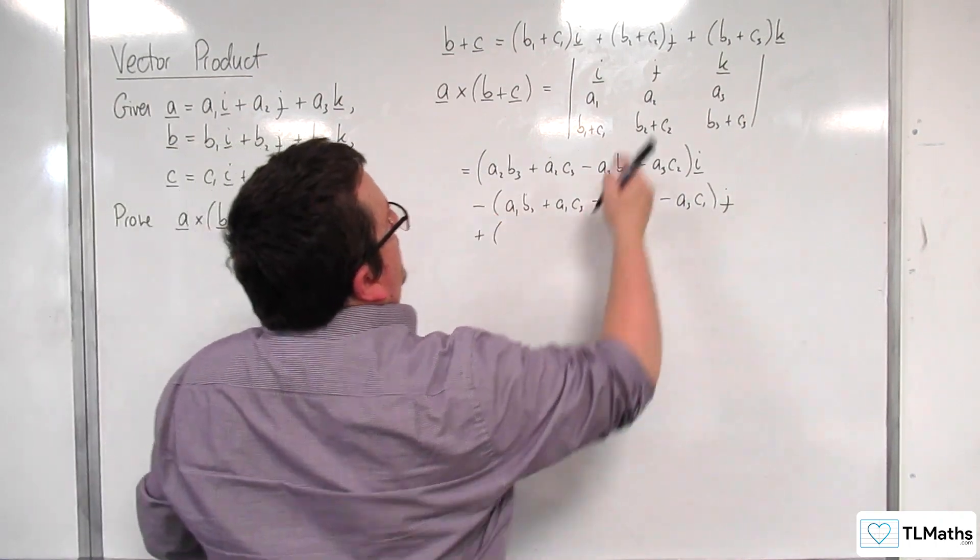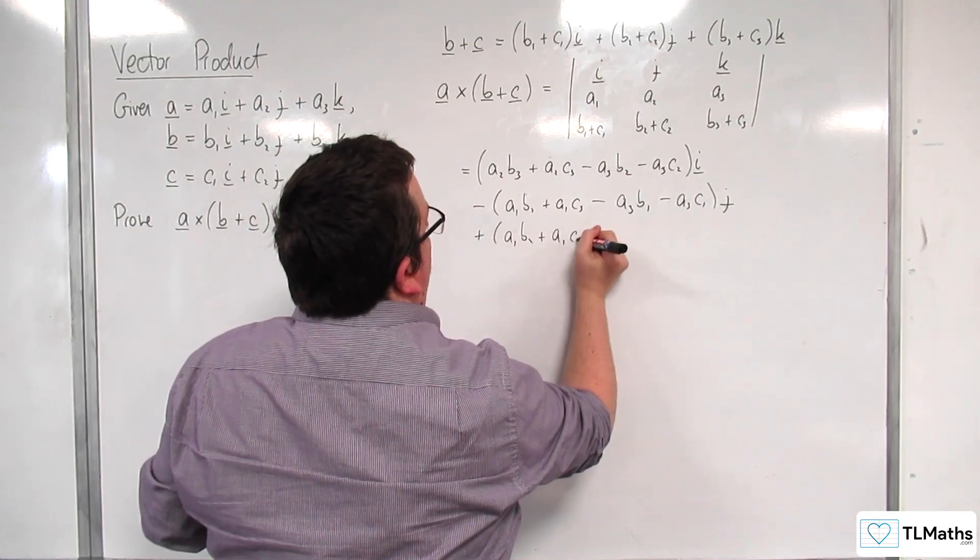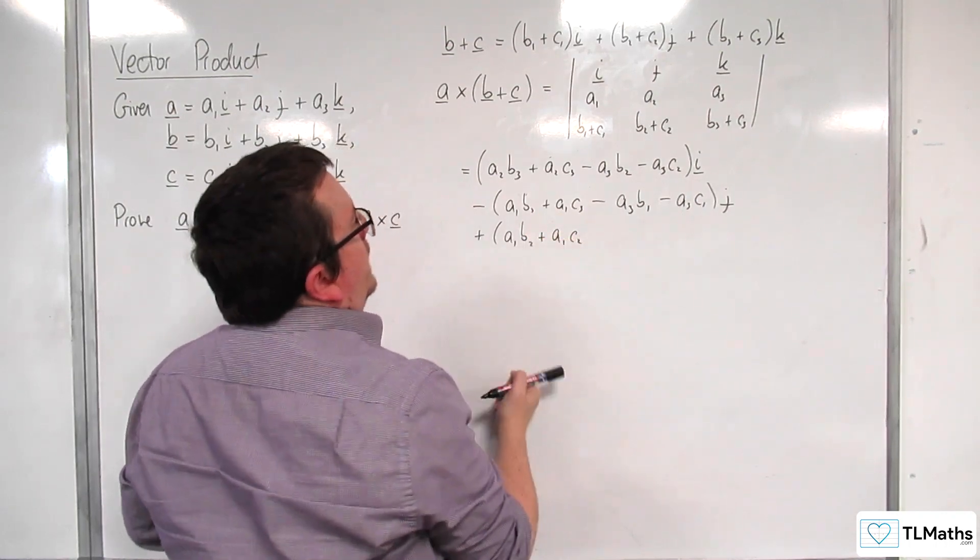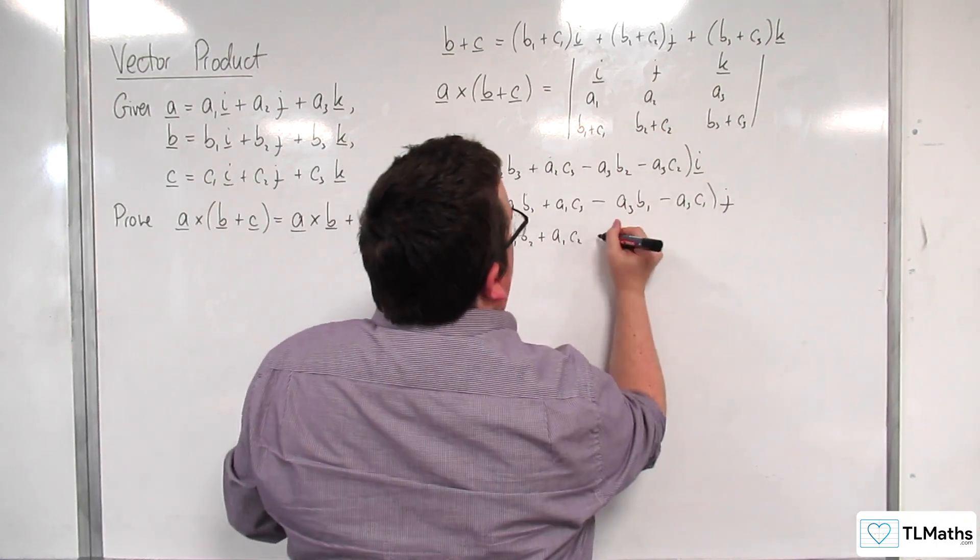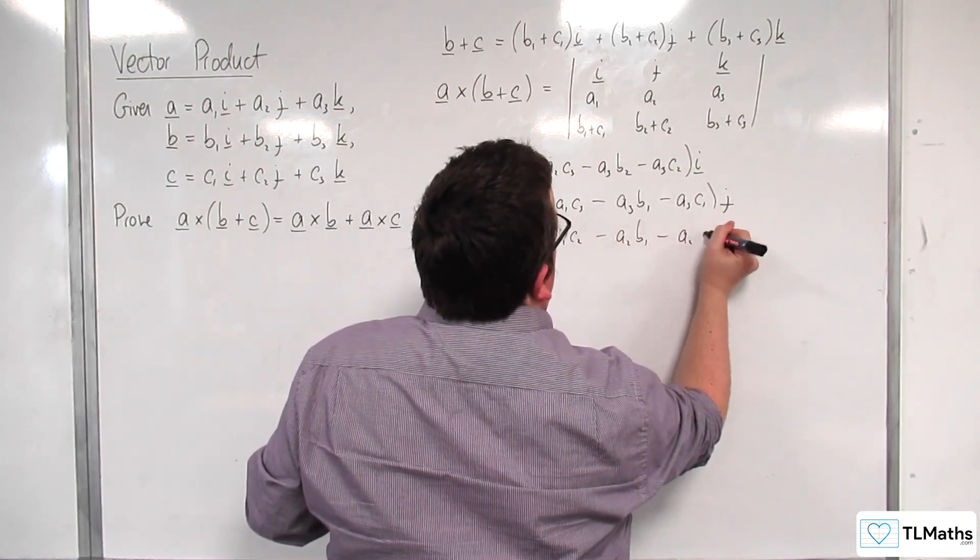So take away a3b2 plus a1c2. Take away a2 times b1. Take away a2c1 k.